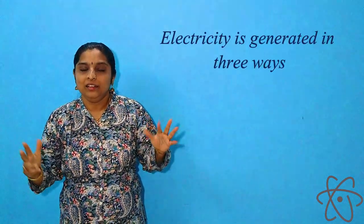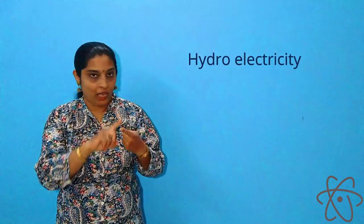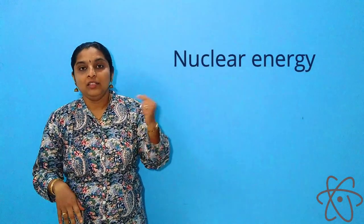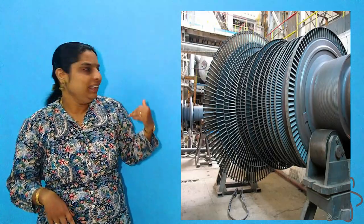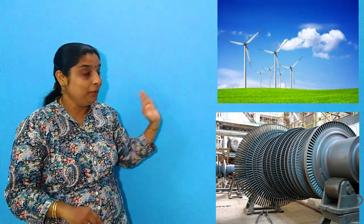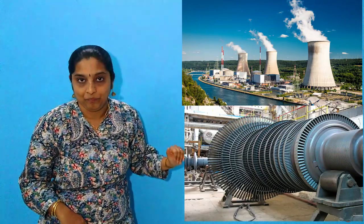We already know how electricity is generated. Mainly electricity is generated in three ways: either through hydroelectricity, or through wind energy, or through nuclear power reactors. In all three cases, electricity is produced by rotating big turbines. In hydroelectricity, turbines are rotated by flowing water; in wind energy, by blowing wind; and in nuclear power stations, turbines are rotated using steam.